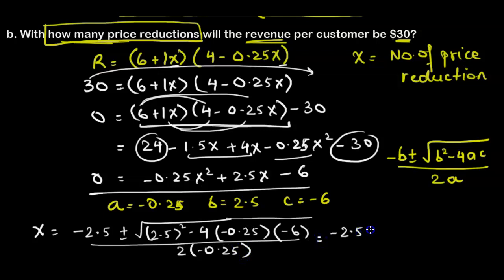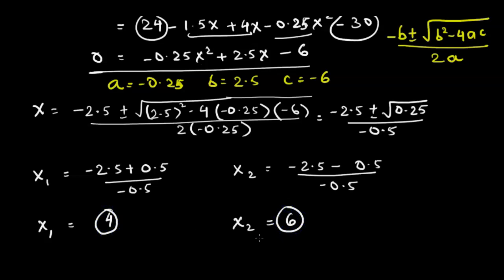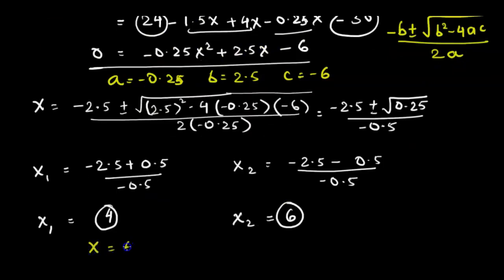Substituting, we get x equals negative 2.5 plus or minus the square root of 0.25, all divided by negative 0.5. This gives two x values: x1 equals negative 2.5 plus 0.5 divided by negative 0.5, which equals 4; and x2 equals negative 2.5 minus 0.5 divided by negative 0.5, which equals 6. Therefore x equals 4 or 6, meaning four or six price reductions will give a revenue of $30.